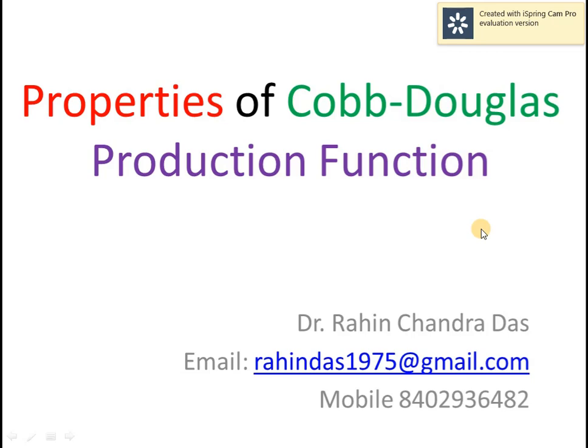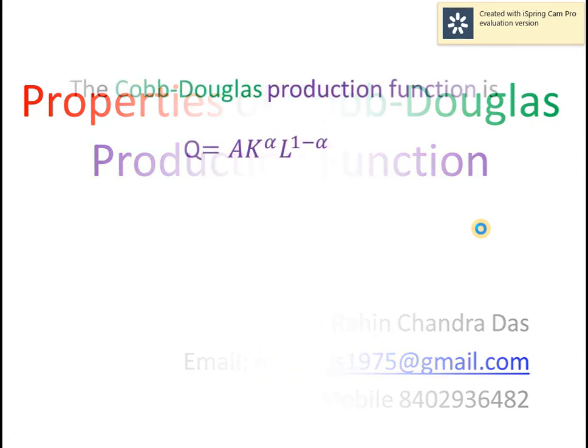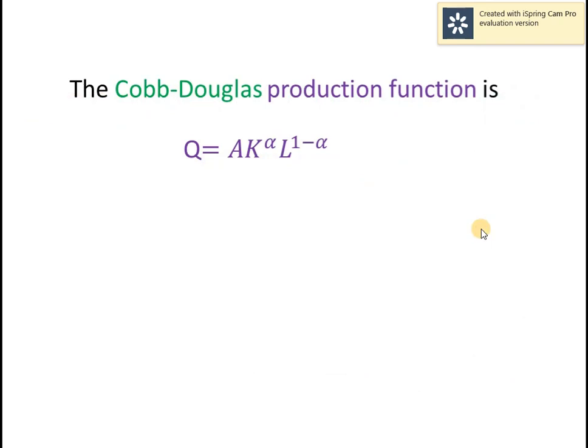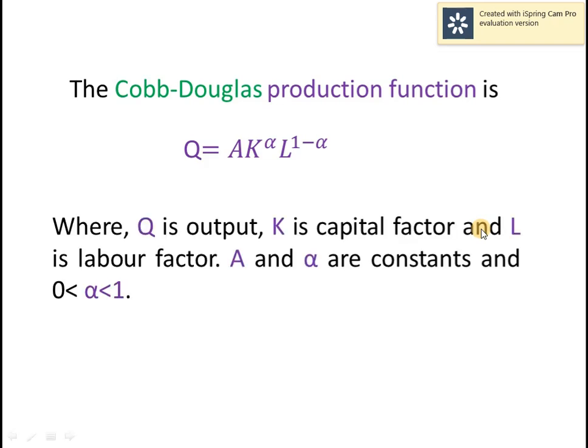Hello viewers, in this presentation we explain the properties of Cobb-Douglas production function. The Cobb-Douglas production function is q = a * k^alpha * l^(1 - alpha), where q is output, k is capital factor, l is labor factor, and a and alpha are constants with alpha lying between 0 and 1.